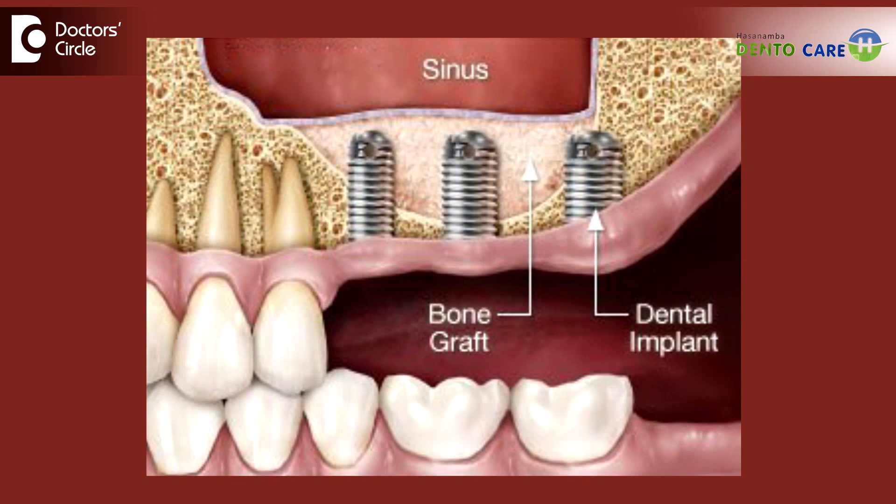Bone grafting generally we will advise in case of restoring the missing tooth with implants, or in order to eradicate edentulism with the help of dentures. Whereas in case of a lot of residual resorptions, when there is no bone to support the underlying structures, we have to restore by doing the bone graft, either autograft or allograft.